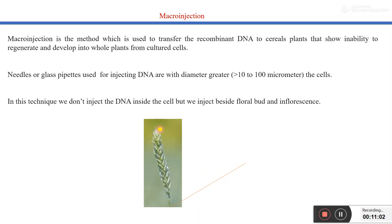In macro injection, we generally inject DNA at the base of the inflorescence. It can also be used in transferring recombinant DNA to cereal plants that show inability to regenerate and develop into whole plants from cultured cells. This method can also be used for transforming plants that are generally grown in tissue culture medium.